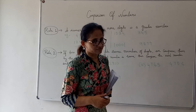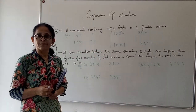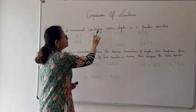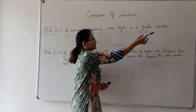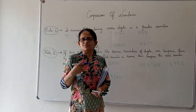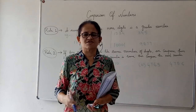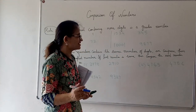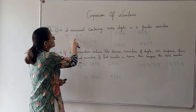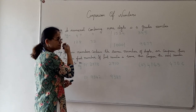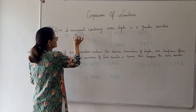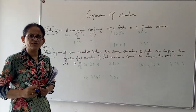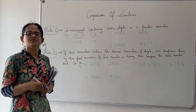There are two rules to be followed while comparing numbers. Rule one is: a numeral containing more digits is a greater number. Obviously the number which has more digits is a greater number, and the number which has less digits is a smaller number. Very simple, isn't it? For example, 47 and 9. 47 has two digits and 9 is a single digit.